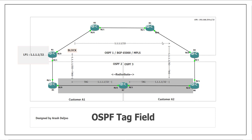Here we have a special situation: external routes are already redistributed into the OSPF of Customer A Site 1. We have external networks being redistributed into Customer A Site 1's OSPF. Because R1 has an OSPF neighbor relationship with R5, it needs to advertise these external networks to the other site — for example, advertising 0.0.0.0/1/32 to Router 4.